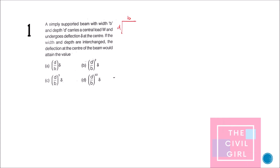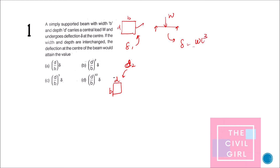The first question: a simply supported beam with width B and depth D carries a central load W. It undergoes deflection at the center. If the width and depth are interchanged, what will the deflection at the center become? For delta-1 the section is B×D, and for delta-2 the section becomes D×B. The deflection formula is δ = WL³ / 48EI.